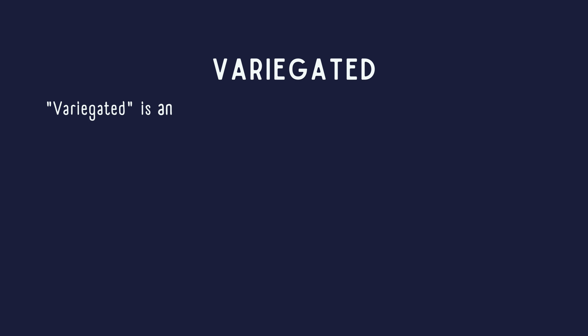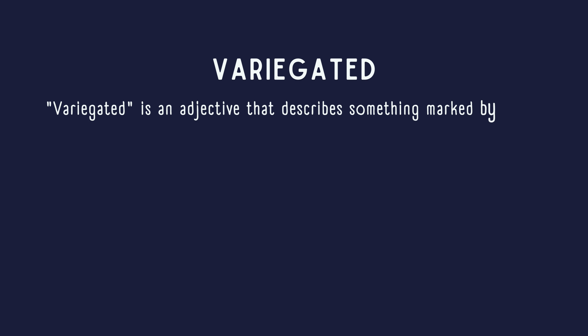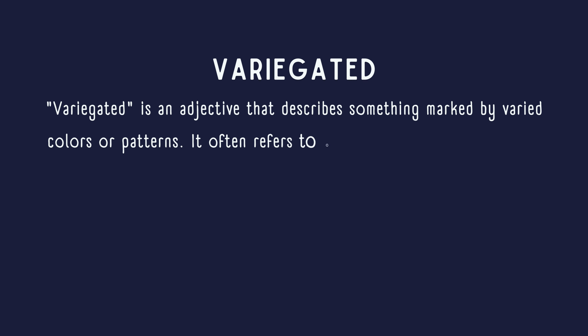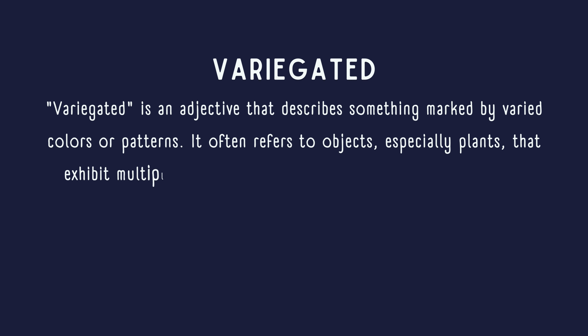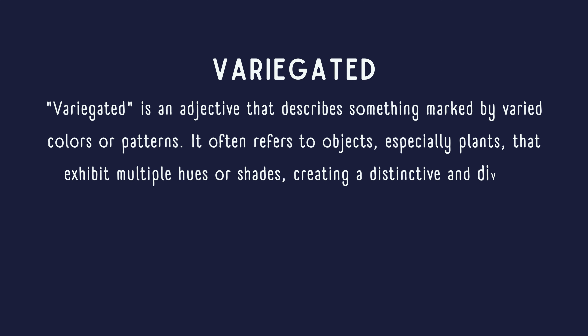Variegated is an adjective that describes something marked by varied colors or patterns. It often refers to objects, especially plants, that exhibit multiple hues or shades, creating a distinctive and diverse appearance.